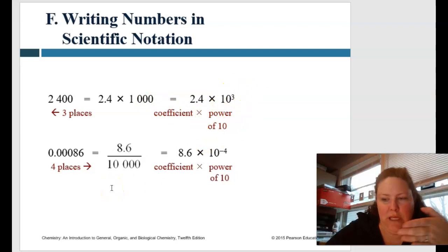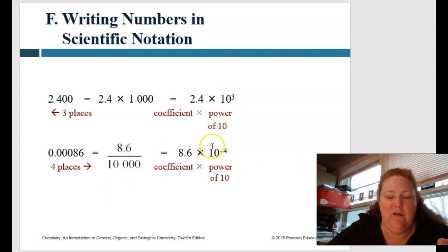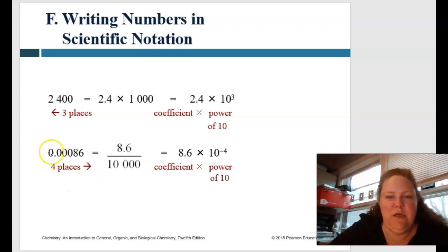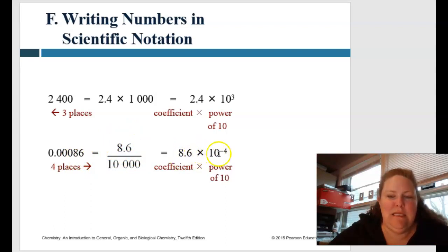Now if we go the opposite way, we have 10 to a negative power. Take the number 0.00086. We have to make the coefficient a single number less than 10, so that would be 8.6. How many times did we have to move the decimal point to make it 8.6? One, two, three, four times. So that's 8.6 times 10 to the negative fourth, because we moved the decimal point four times the other way.